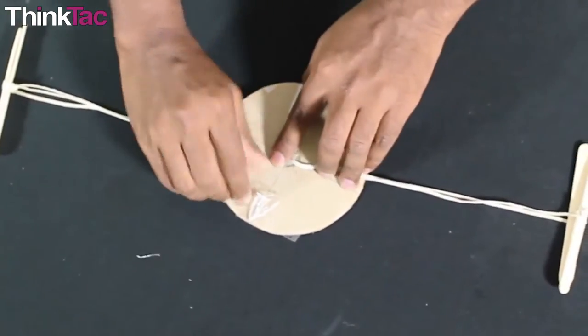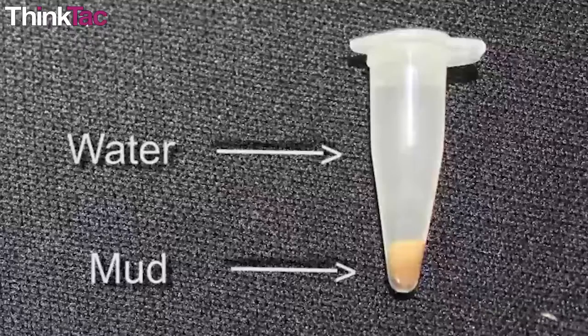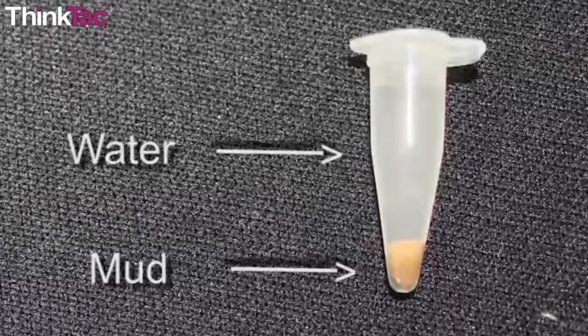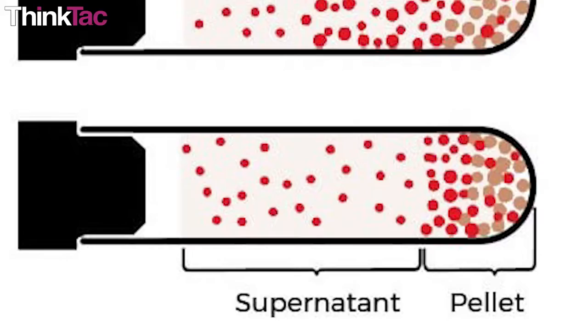Eventually, after some spinning, all the dirt particles would have gotten displaced to the end of the tube, farthest away from the center, and the water particles will remain on top. The particles at the end of the tube form what is known as a pellet and the remaining solution is known as the supernatant.